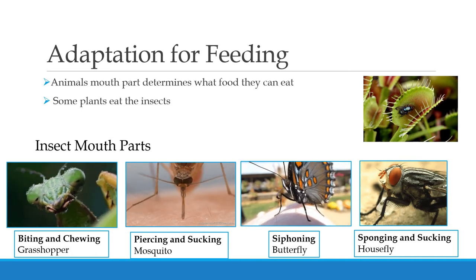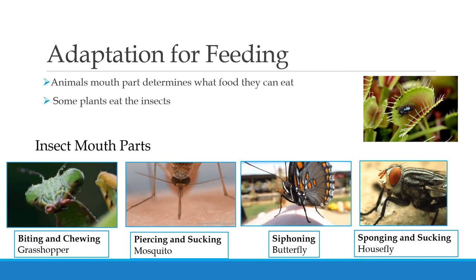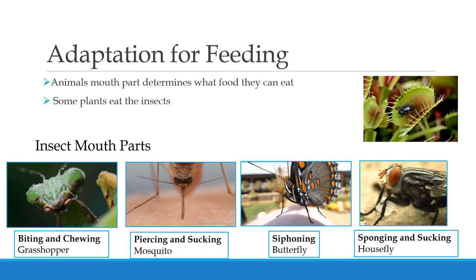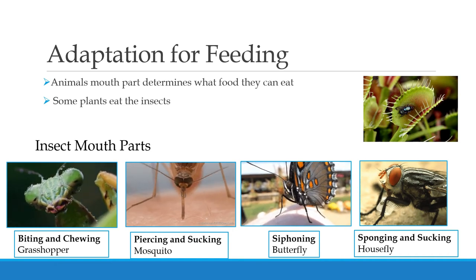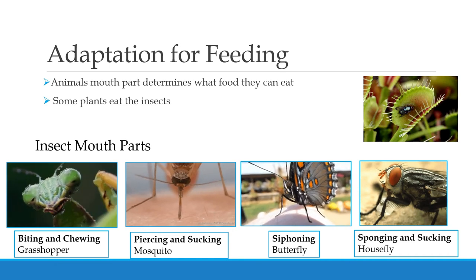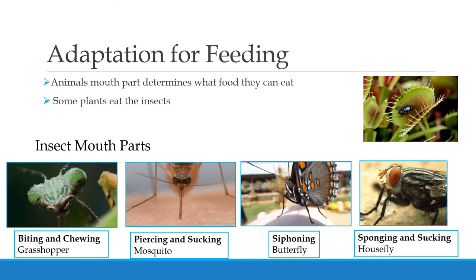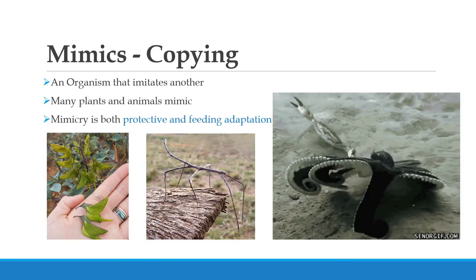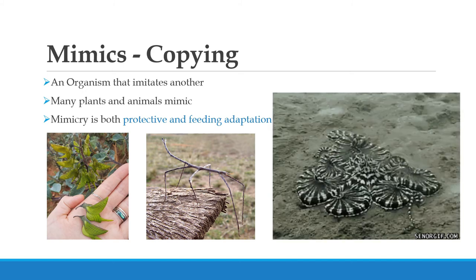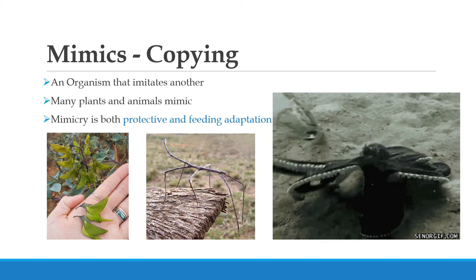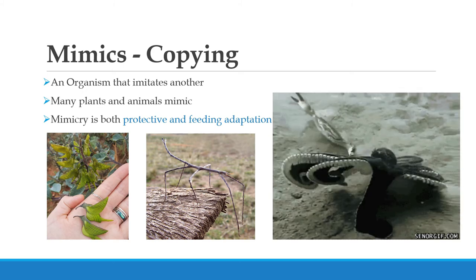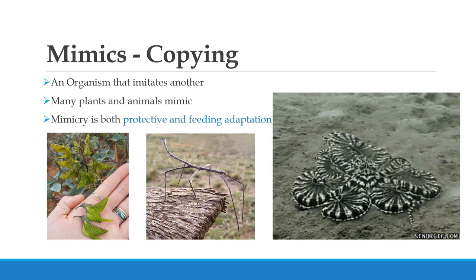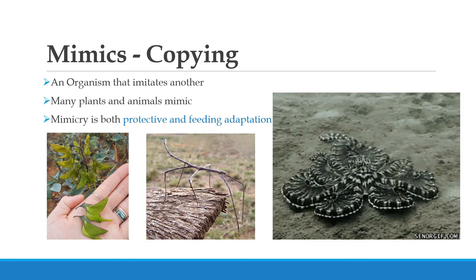I'm sure you would have understood the different insect mouth parts and how they help them in adaptation for feeding. Mimicry means copying — it is when an organism imitates another. Many plants and animals mimic, and mimicry is both a protective and feeding adaptation.